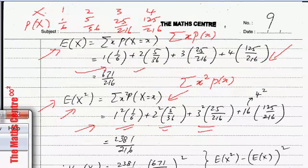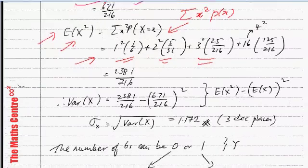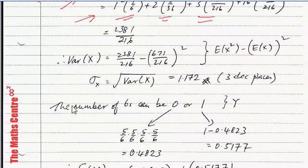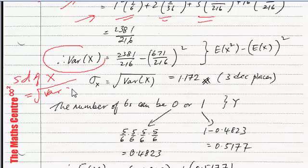Now let's work out the variance. The variance is the expected value of X squared minus the expected value of X, whole thing squared. So we write 2381 over 216 minus 671 over 216, whole thing squared. We are going for the standard deviation, which is the square root of the variance. Use a calculator, work out the variance, take the square root, and you get 1.172.